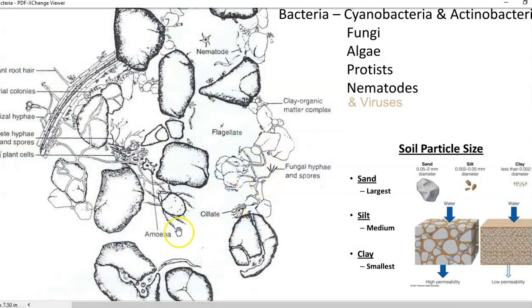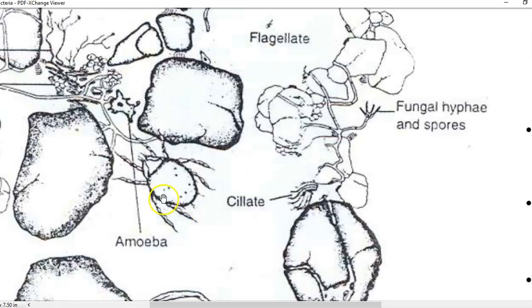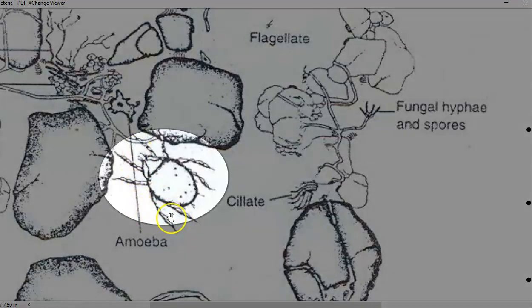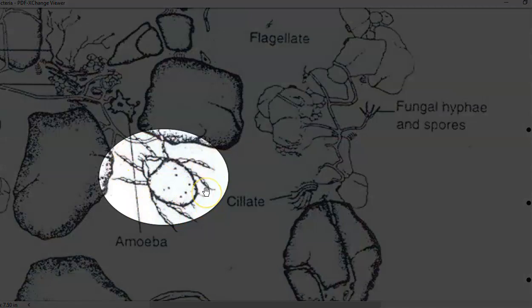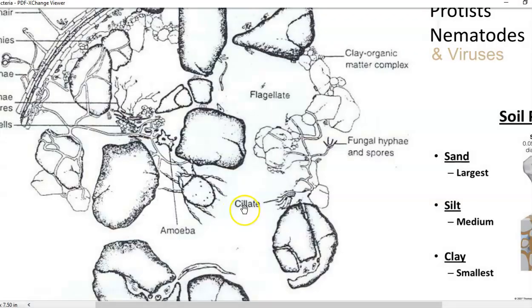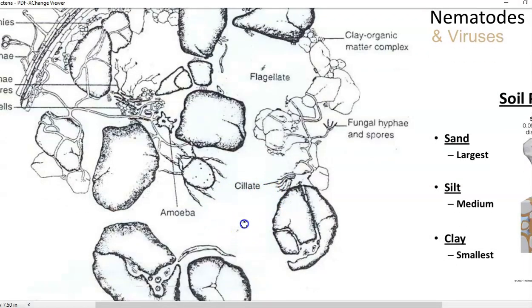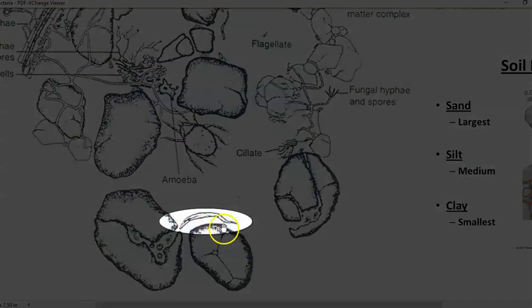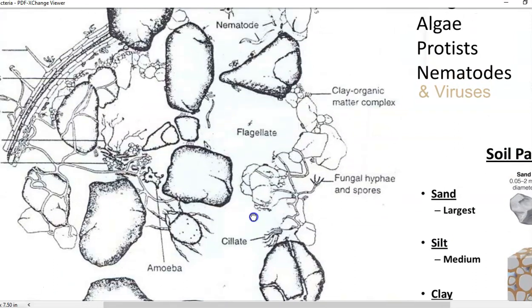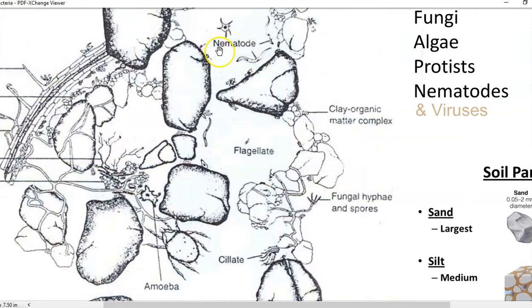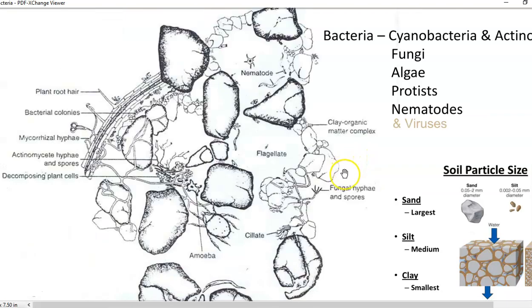Flagellates, ciliates, and amoeba are all various protozoa present in the soil. You can also see a tiny insect called mites — some kind of mites may also be present in the soil. You can see nematodes present there as well. So these are all the various kinds of microorganisms that can be found in the soil system.